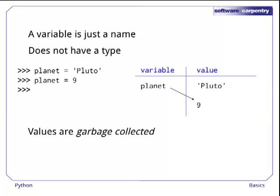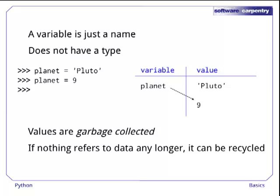One other important feature of Python is that values are garbage collected. This means that if nothing refers to a piece of data any longer, Python recycles its memory. For example, once we assign 9 to planet, nothing is pointing at the string Pluto any longer, so Python is free to reclaim that memory and use it to store other information.